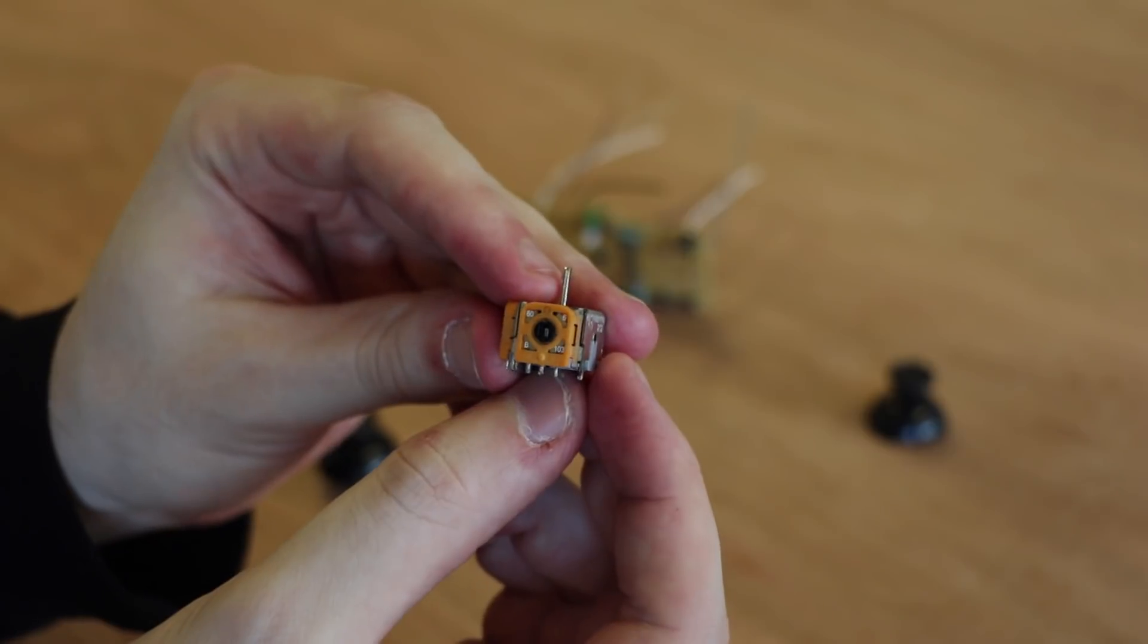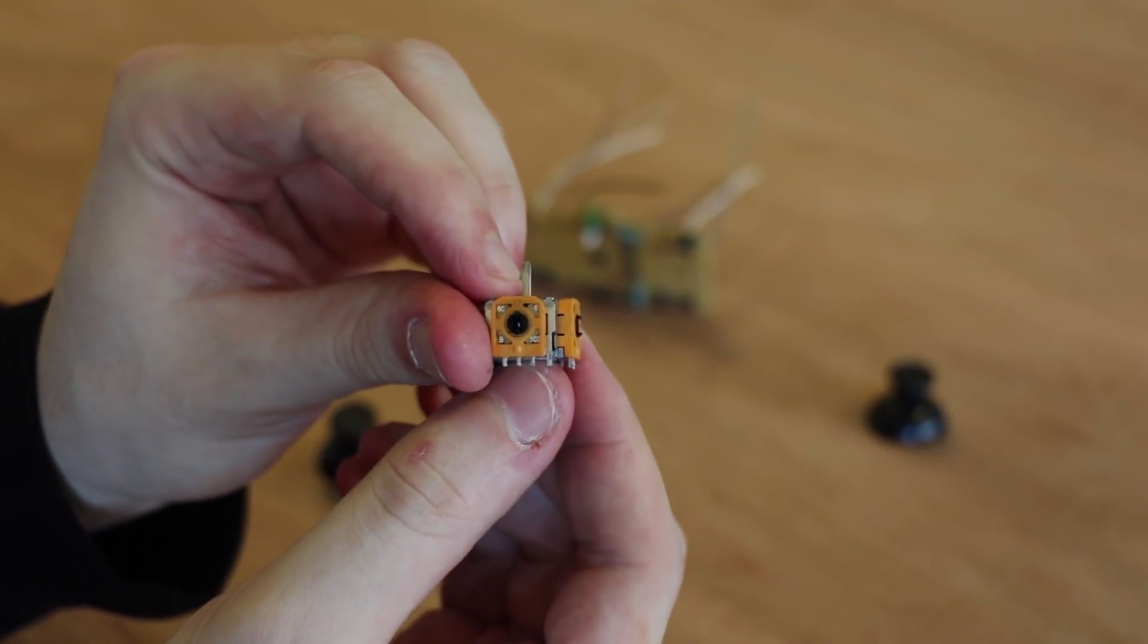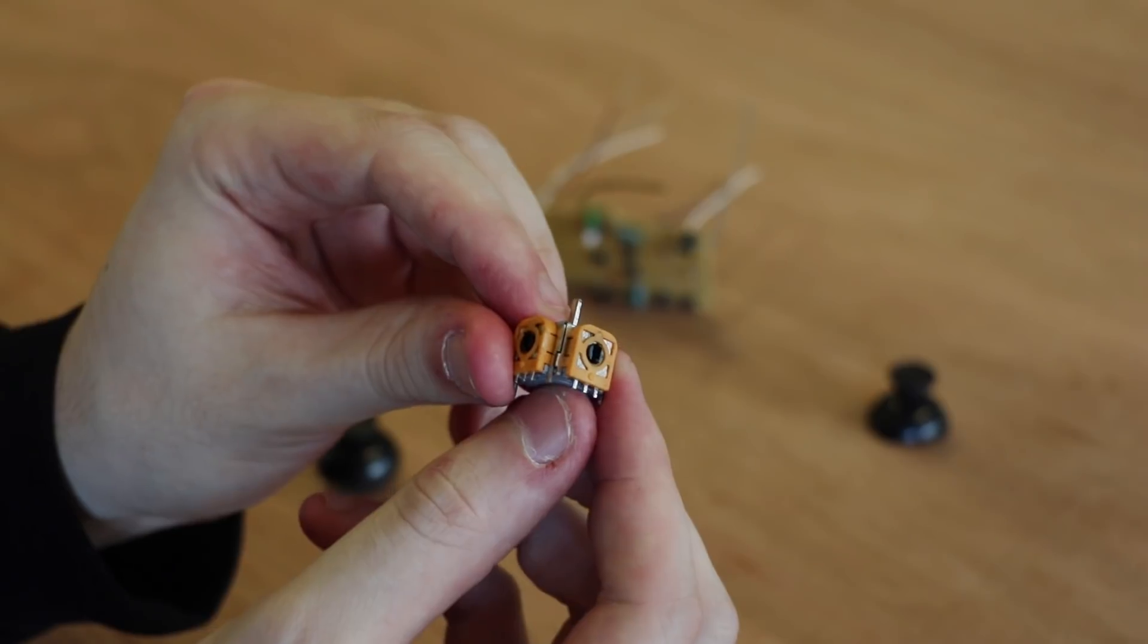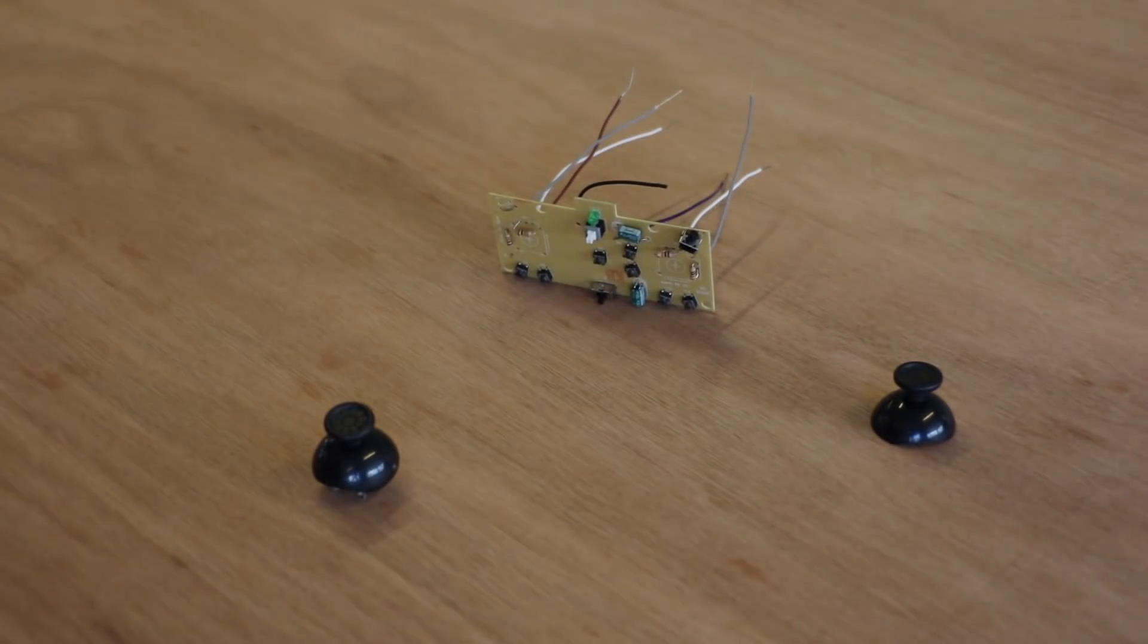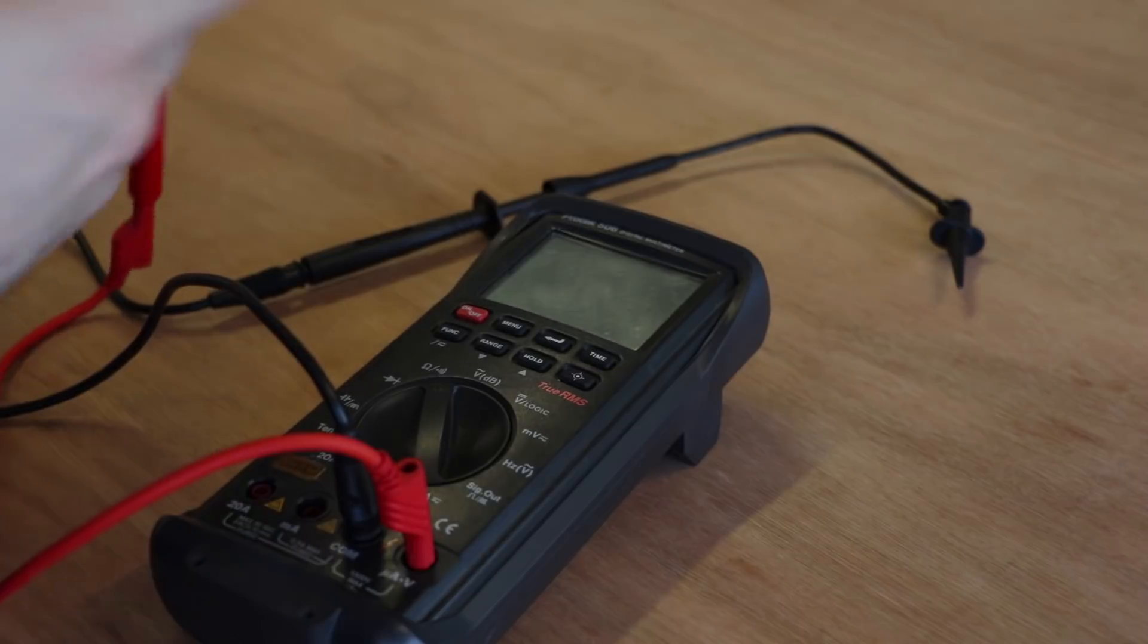Actually, this joystick contains two potentiometers, one in the x-axis and one in the y-axis. We can measure the resistance of the potentiometers with a multimeter.